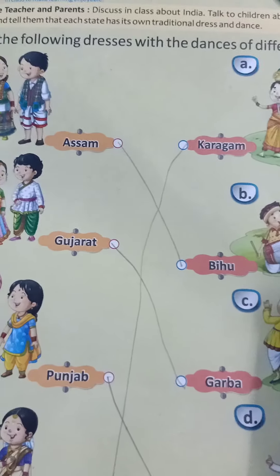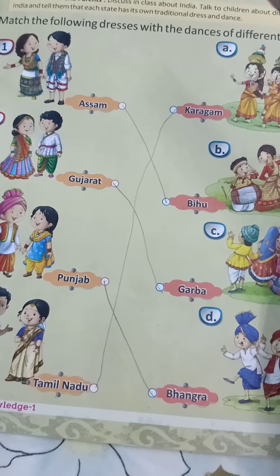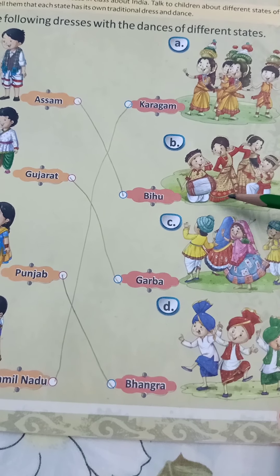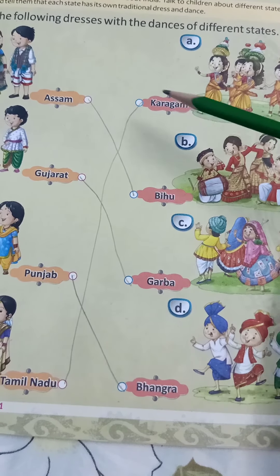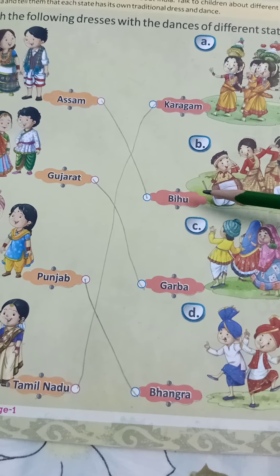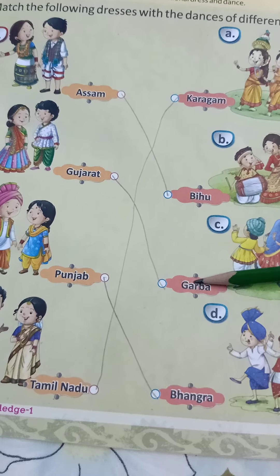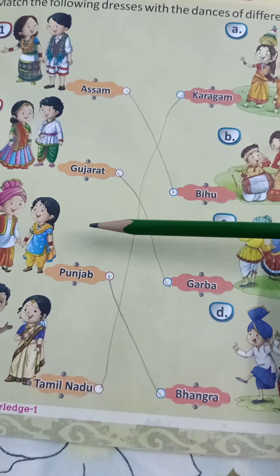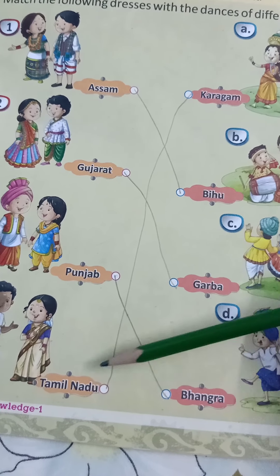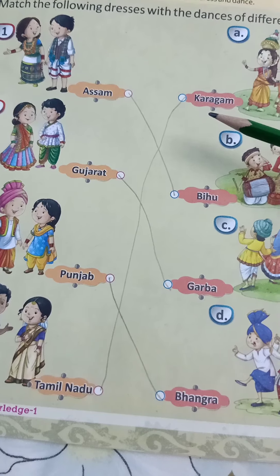Now we have to match it. Let's see: Assam — Bihu, Gujarat — Garba, Punjab — Bhangra, Tamil Nadu — Karagam.